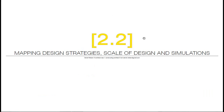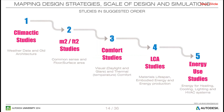I will try to map design strategies, scale of design, and simulations. As an introduction for this section, I will briefly go through some suggested order on different types of studies. We have already talked about climatic studies. The next step I suggest is looking at areas — for example surface areas, floor areas, compactness — and all these metrics related to square meters or volume. As a next step, I will look at comfort before looking at energy results and energy performance, and I will come back to why in just a minute. After comfort, I will look into embodied energy with LCA analysis, and as one of the last studies, look at energy use and energy performance.